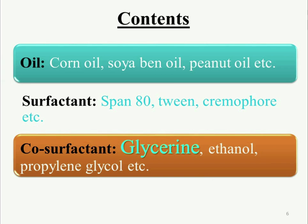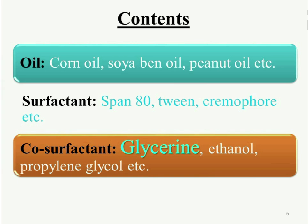Next is the co-surfactant. The role of the co-surfactant, together with the surfactant, is to lower the interfacial tension to a very small, even transient negative value. Co-surfactants generally used in the formulation include glycerin, ethanol, and propylene glycol.